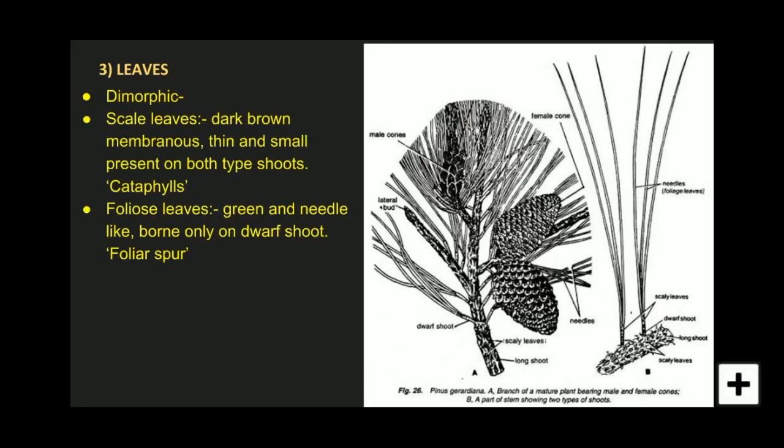The term cataphylls refers to the scaly leaves which are present on the dwarf shoot with a distinct midrib — those are called cataphylls. Once the branch gets mature, they fall off. Remember: scaly leaves present on the dwarf shoot with distinct midrib are called cataphylls — this may be asked as an exam question.